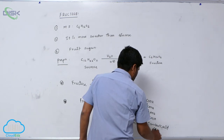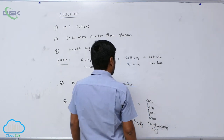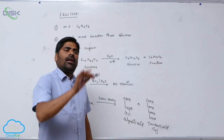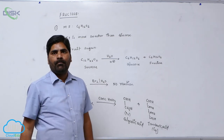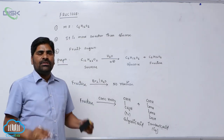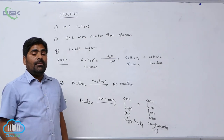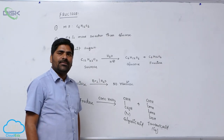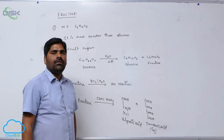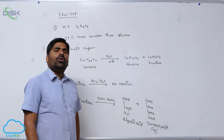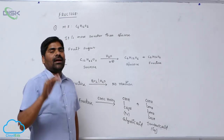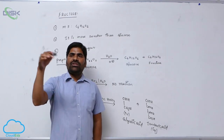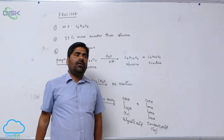Glycolic acid has 2 carbons and tartaric acid has 4 carbons. The formation of these two carboxylic acids indicates that rupture takes place at the second carbon. This means the second carbon contains a keto group — due to the presence of the keto group at the second position, breakage or rupture takes place.